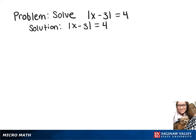In this video, we're going to solve the absolute value of x minus 3 equals 4. What that means is that we have x minus 3 equals 4, or x minus 3 equals negative 4.